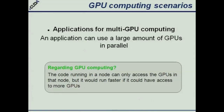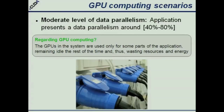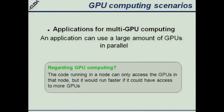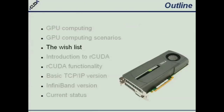And finally, for the multi-GPU computing scenario, if we are able to design an application that uses 20, 40, or 50 GPUs efficiently, we cannot provide that application this amount of GPUs, because currently a node can only have four or eight GPUs at most. So we will concentrate on these two scenarios where Arcuda is useful: when we have a moderate level of data parallelism, and when we have an application that could use as many GPUs as available but we can only provide a few.